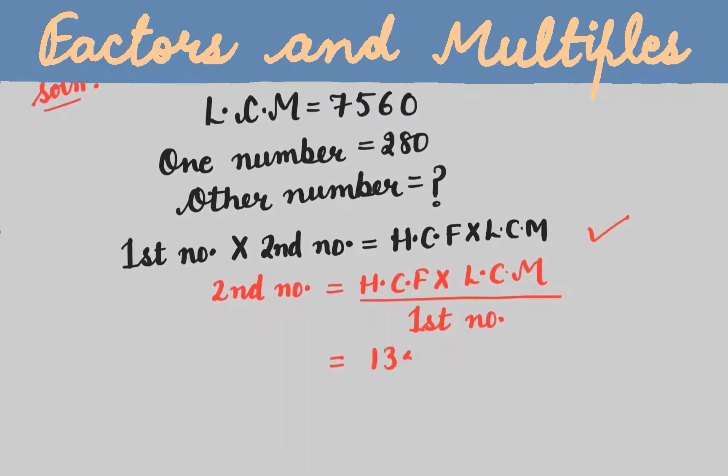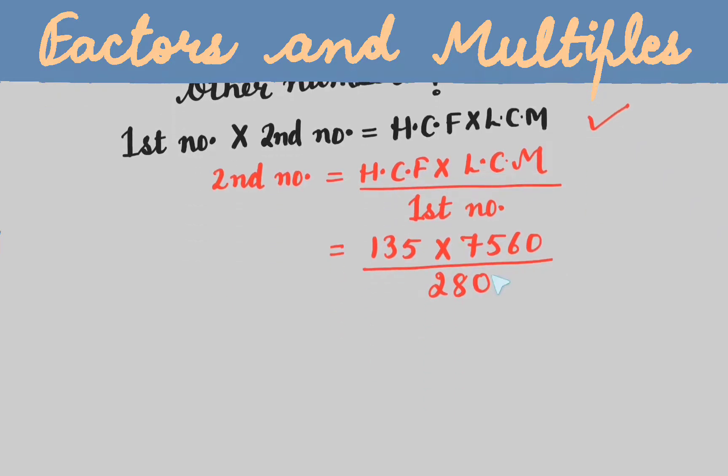135 into 7560 over first number, this is 280. Now zero and zero cancelled. Now we will divide it.